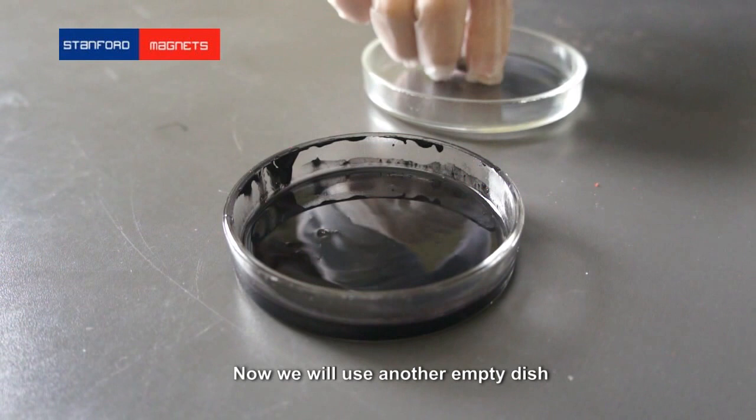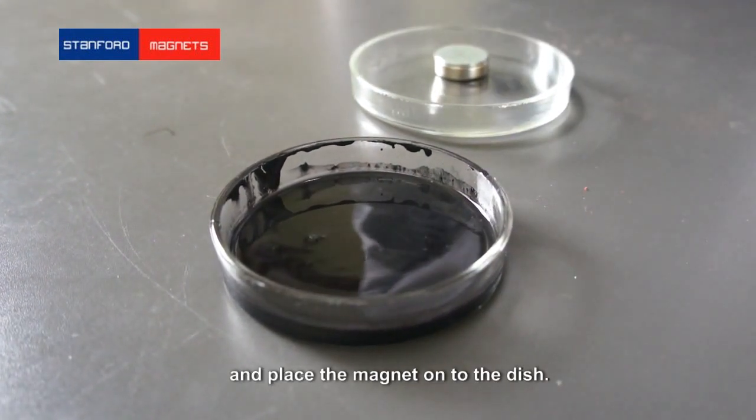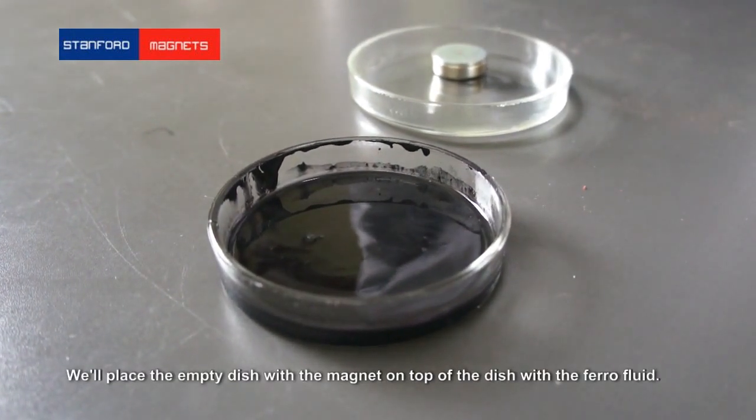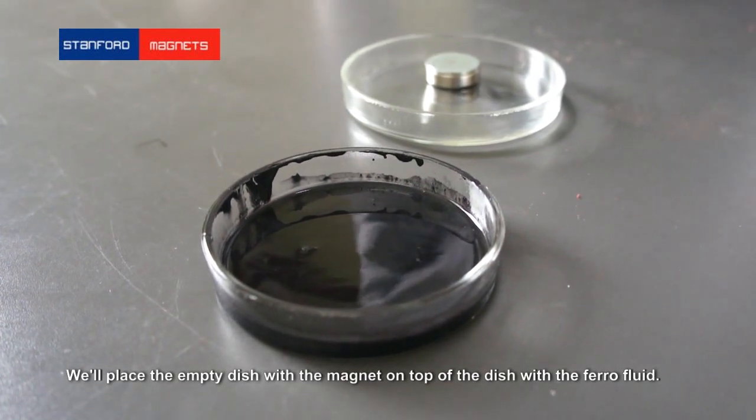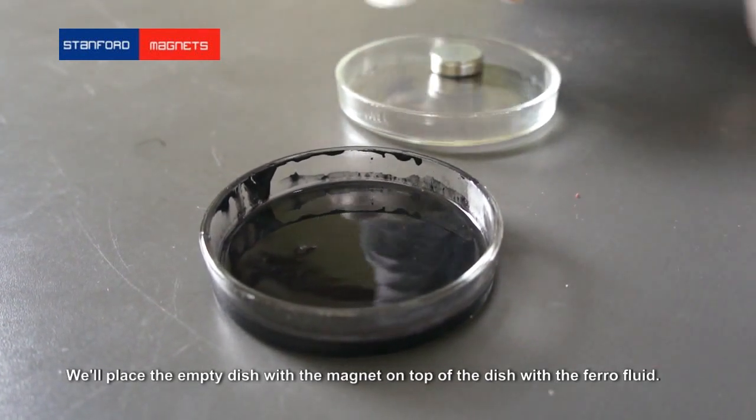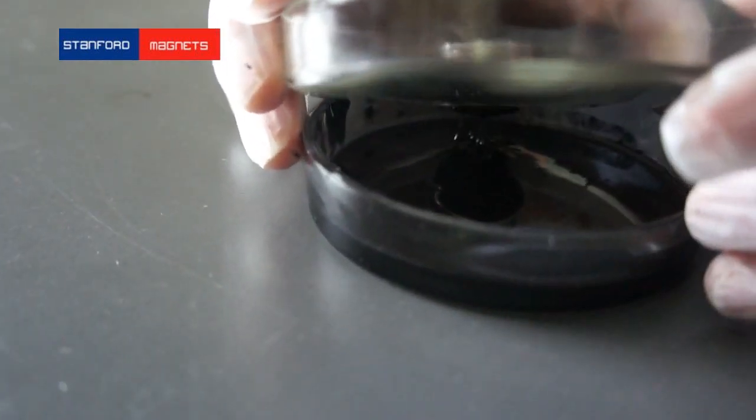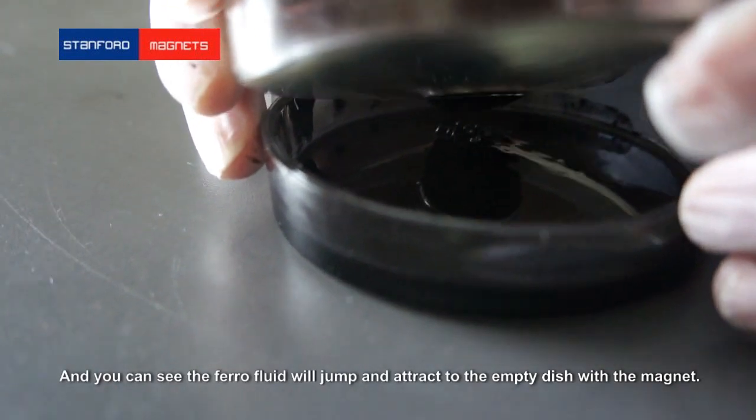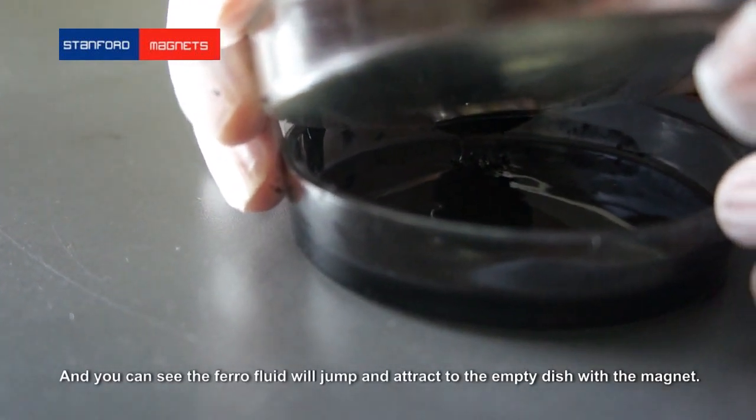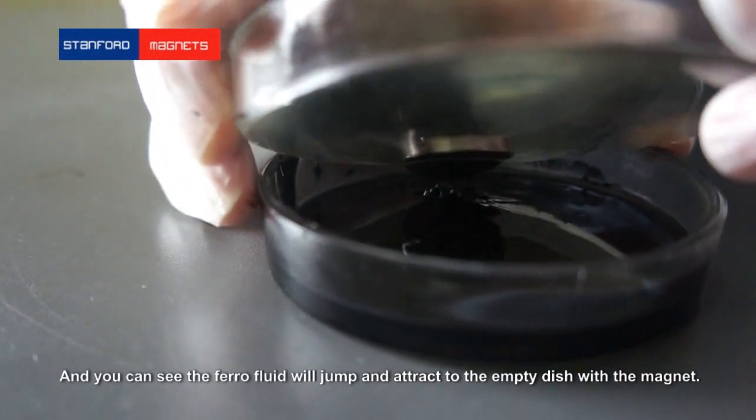Now we will use another empty dish and place the magnet onto the dish. We will place the empty dish with the magnet on top of the dish with the ferrofluid. And you can see the ferrofluid will jump and attract to the empty dish with the magnet.